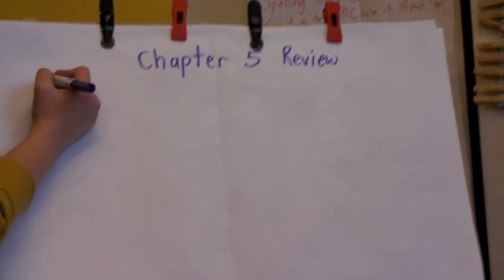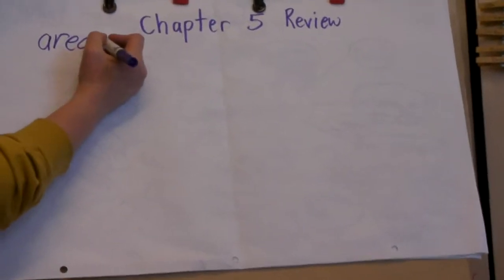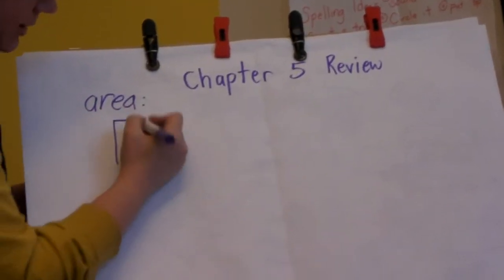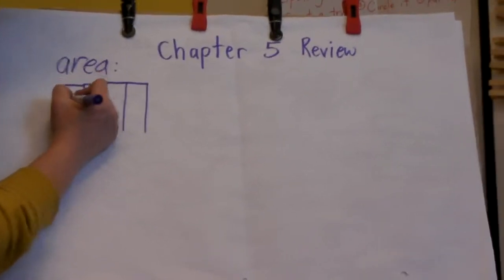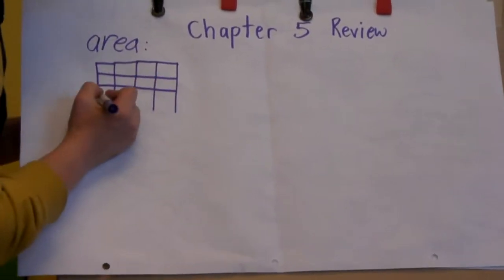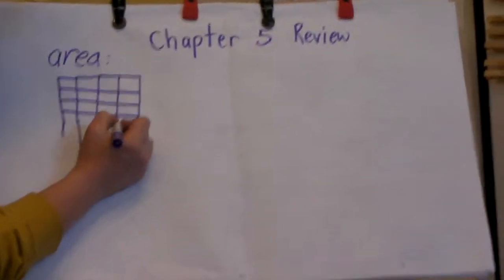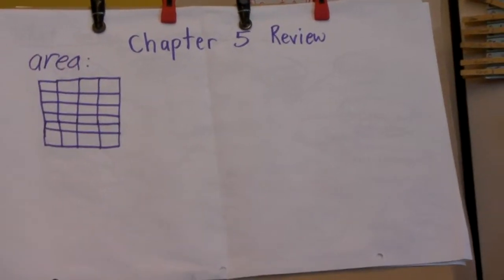All right, so you want to make sure that you know about finding area tomorrow, or anytime. But if we're talking about your Chapter 5 review, if I have a shape that looks like this, and I need you to imagine that all of these squares are the exact same size, even though they're clearly a little bit different. And I say to you, what is the area of the shape?